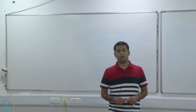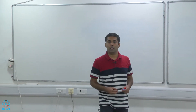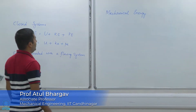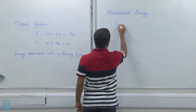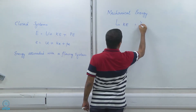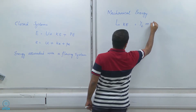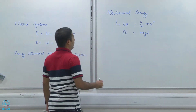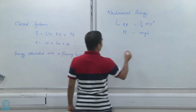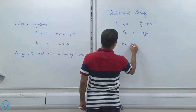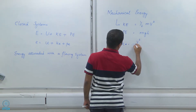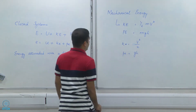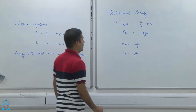In the previous video we discussed internal energy in more detail. The most familiar forms of mechanical energy are kinetic energy, which is equal to half mv squared, and potential energy, which is equal to m times g times h. On a per-mass basis, KE equals v squared over two, and PE equals g times h.